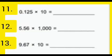Similarly, question number 11: 0.125 multiplied by 1,000. The product will be 125. In this way we can multiply different decimal numbers by 10, by 100, by 1,000.